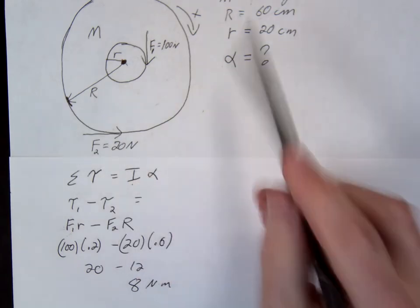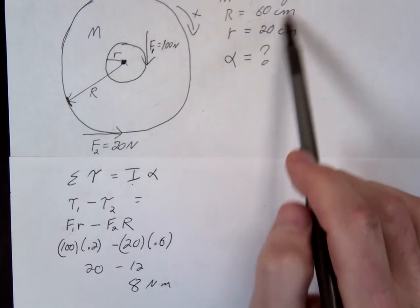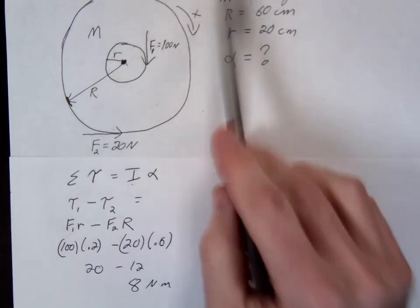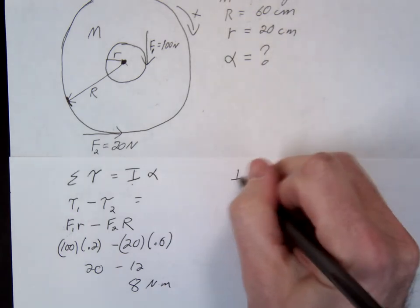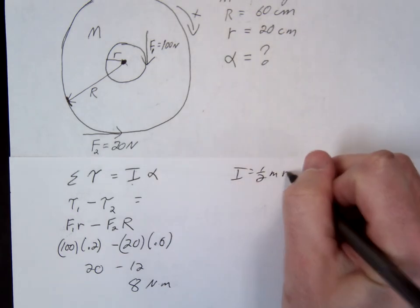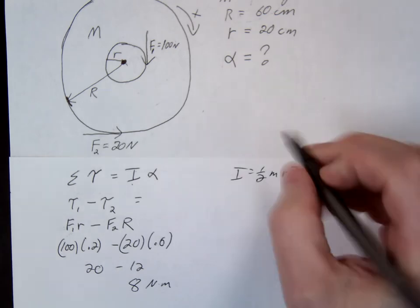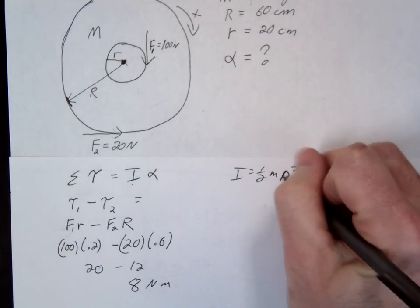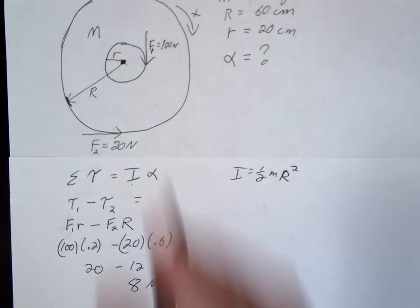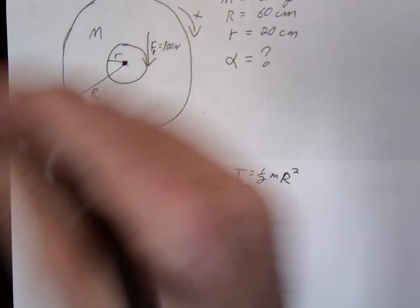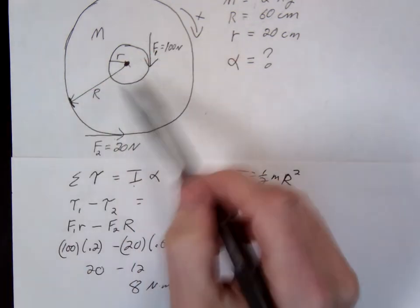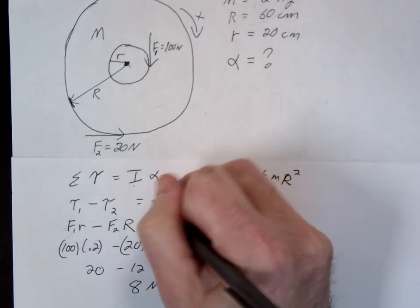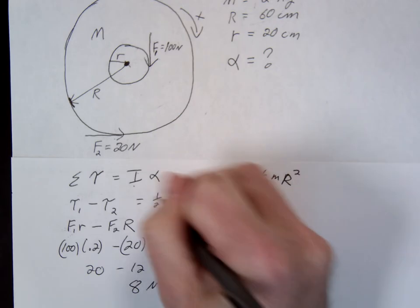If it's a solid disk, different configurations have different dimensions. What's the I for a solid disk? One half m R squared. And which R is this - little r or big R? The big R. The whole thing is rotating, so we consider that radius. If only the inner part was rotating, we'd use that radius.